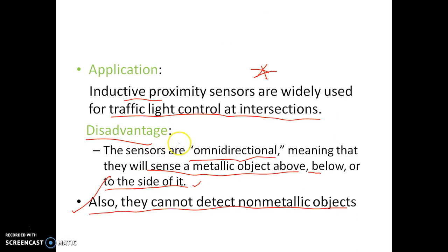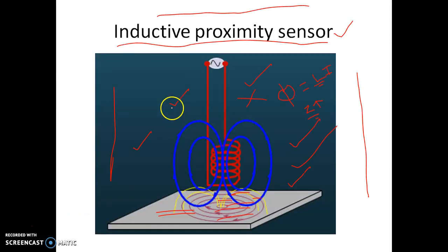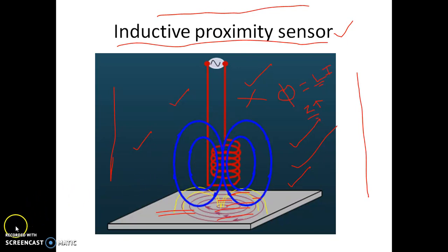The major two disadvantages of these sensors are: they are omnidirectional and cannot detect non-metallic objects. The application is that inductive proximity sensors are widely used in traffic light control. I hope the working principle, application, and disadvantages of the inductive eddy current type proximity sensor are clear to you. Thank you for watching.